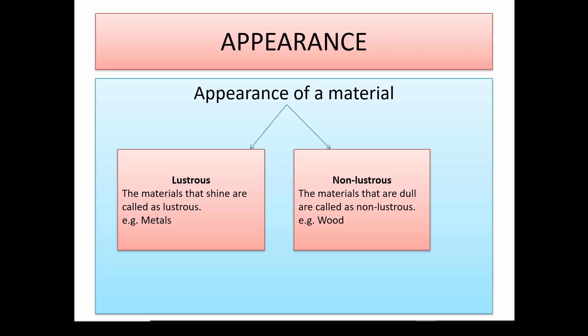You must have seen that a silver glass or your mom's silver jewelry becomes dull in appearance over time. This happens because due to the action of air and moisture, most metals tend to lose their shine and give a dull appearance. This dull appearance from silver and gold ornaments can be removed by getting them repolished. Certain non-metals also have luster — for example, iodine crystals and graphite.